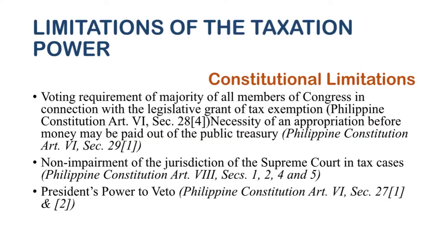Finally, we have the president's power to veto. The veto power is the power of the president to disapprove certain provisions of a bill or the entire bill itself. For example, in December 2017, President Duterte vetoed some items of the TRAIN Law — certain provisions were disapproved because they were deemed damaging to offshore regional units. However, the other provisions of the bill were approved, and thus the TRAIN Law took effect in January 2018.